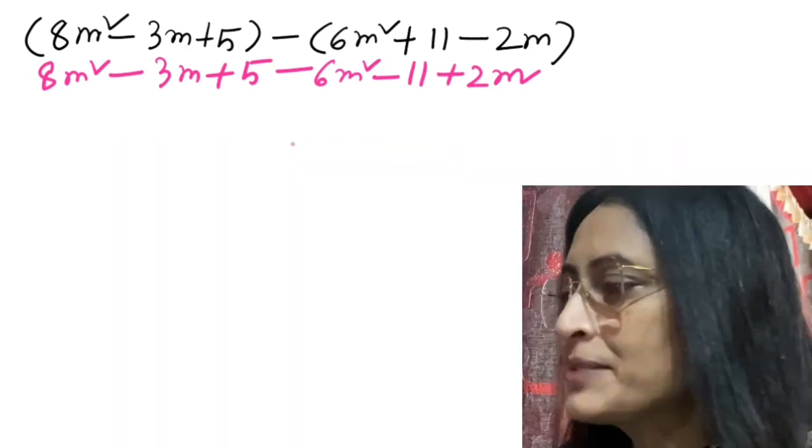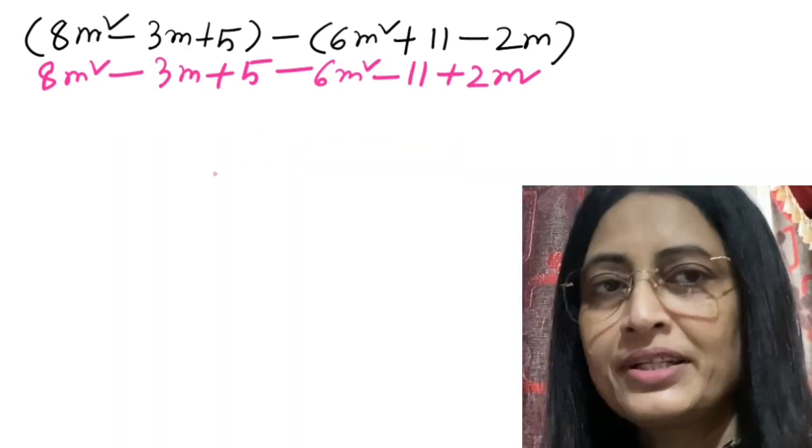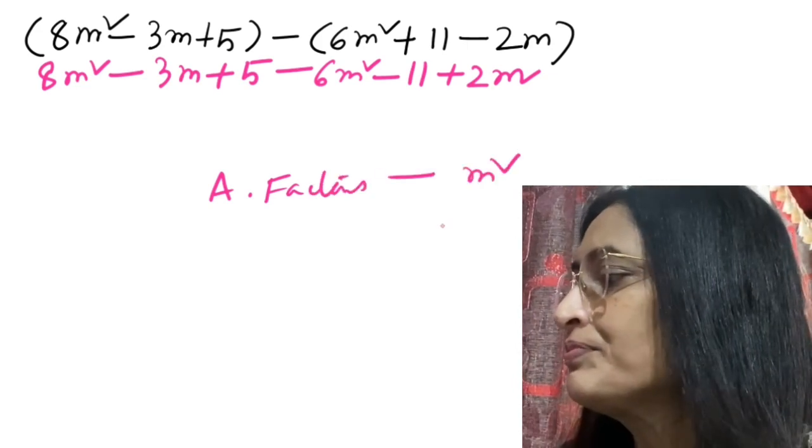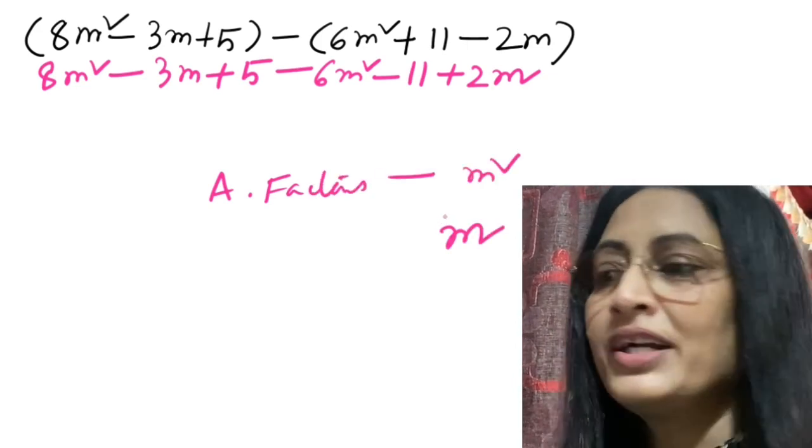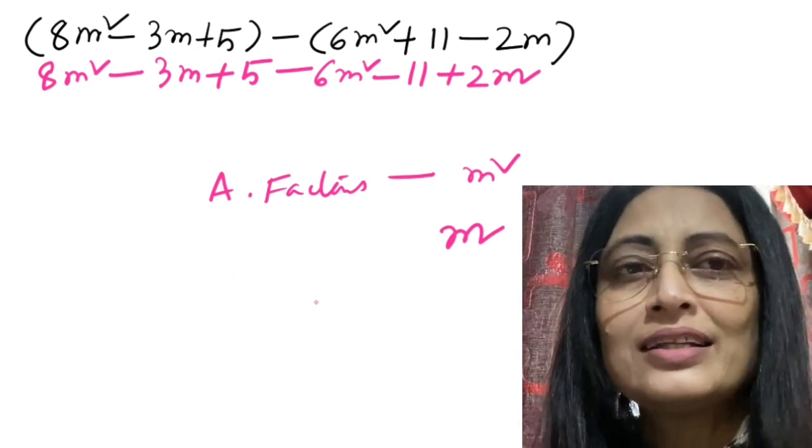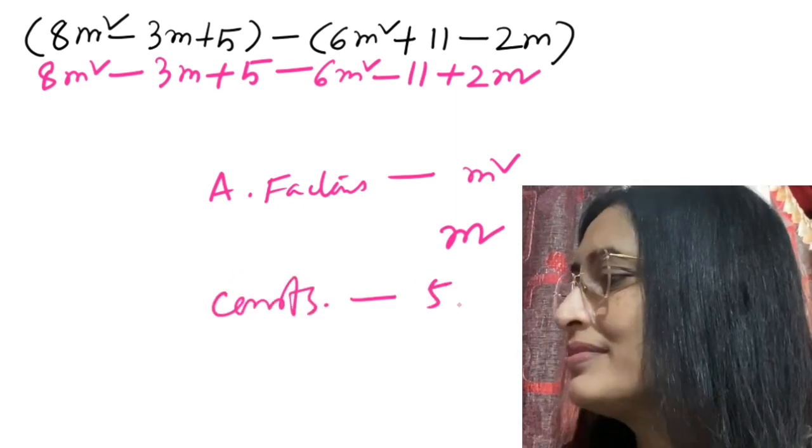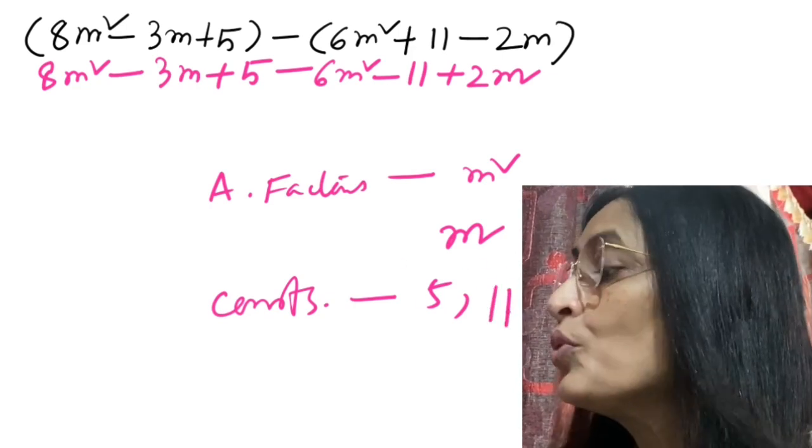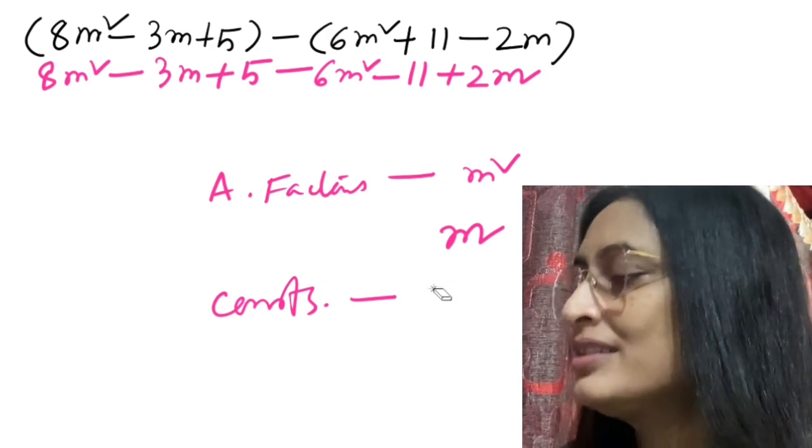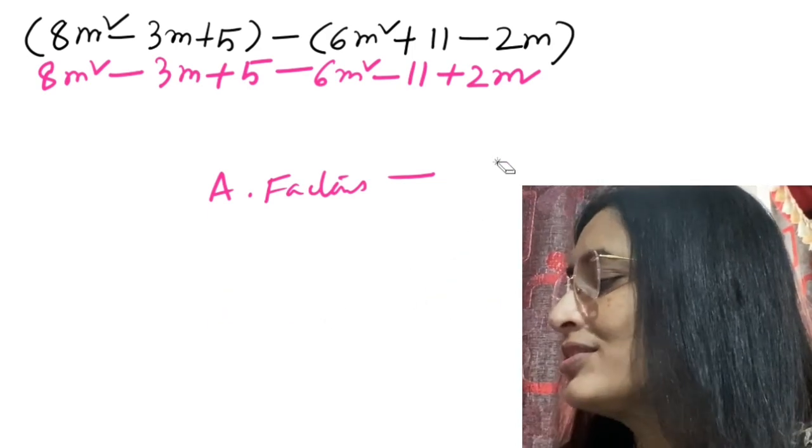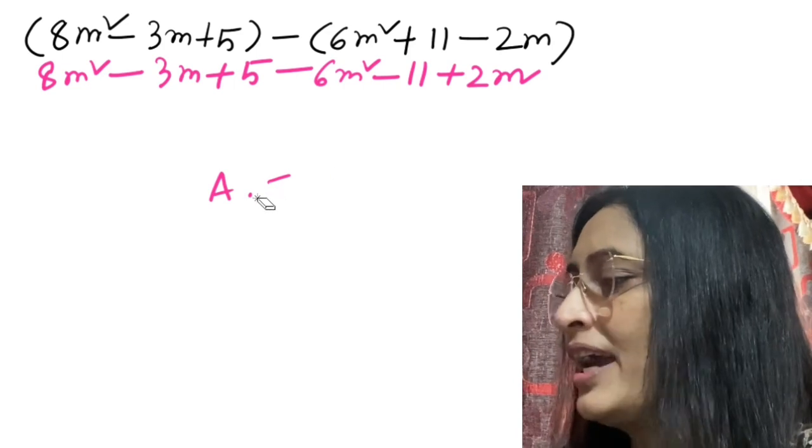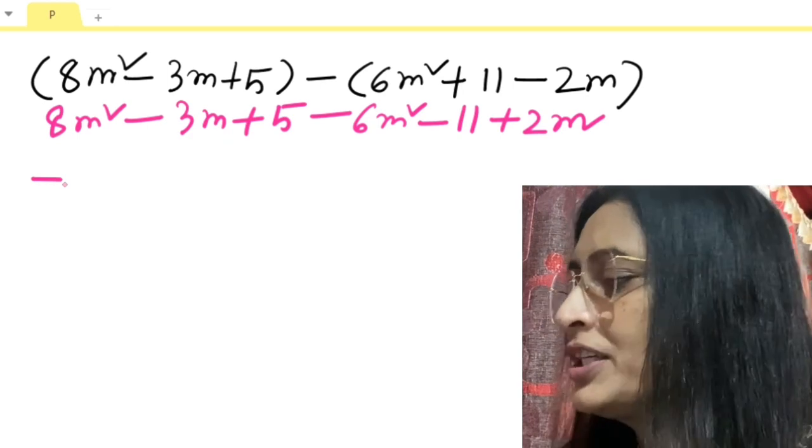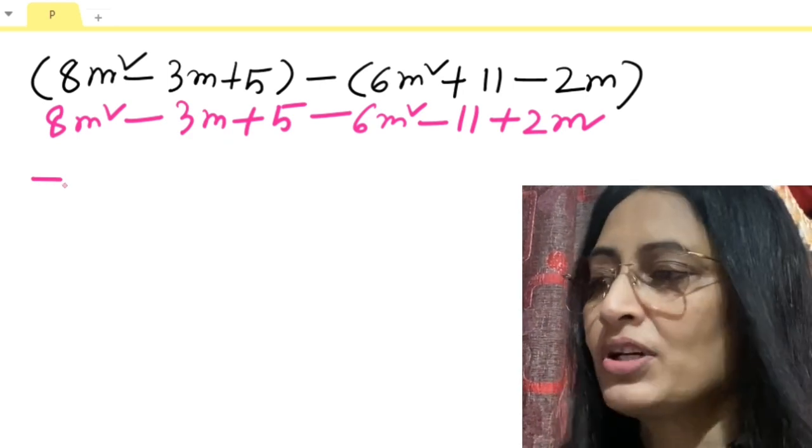In this expression, how many algebraic factors are there? One algebraic factor is m square and another one is m. The rest of the terms are constant terms. Next, what to do? We will have to rearrange the terms. m square terms together, then m terms together, lastly all constant terms together.